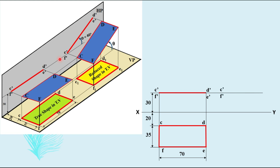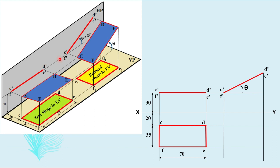Next, locate C'F' again on the same projector and redraw the front view at the given angle theta of 40 degrees. Name the points accordingly. Then take projectors down from the tilted front view, and from the top view obtain four intersection points: C1 from the projector of C' and the horizontal from C, then similarly D1, E1, and F1. Join these points in sequence to get the reduced shape top view.